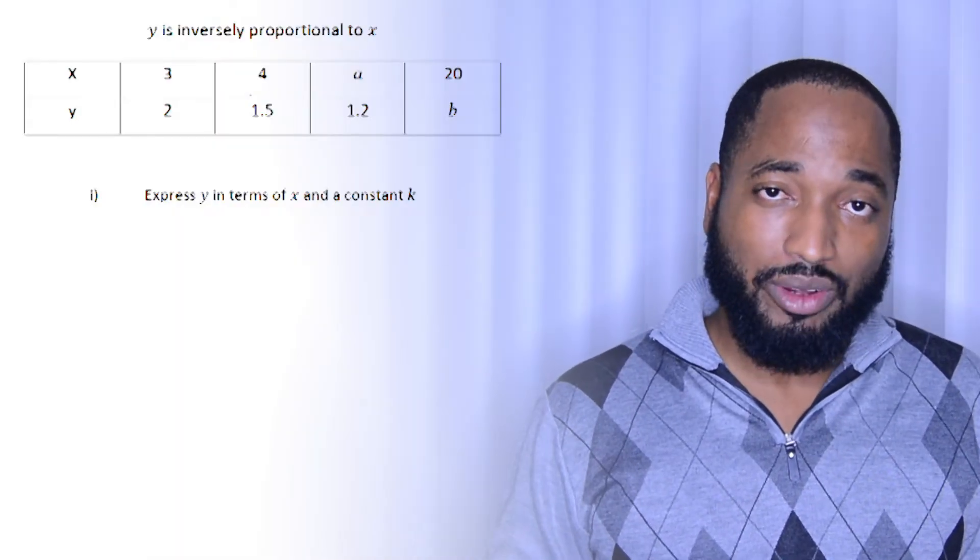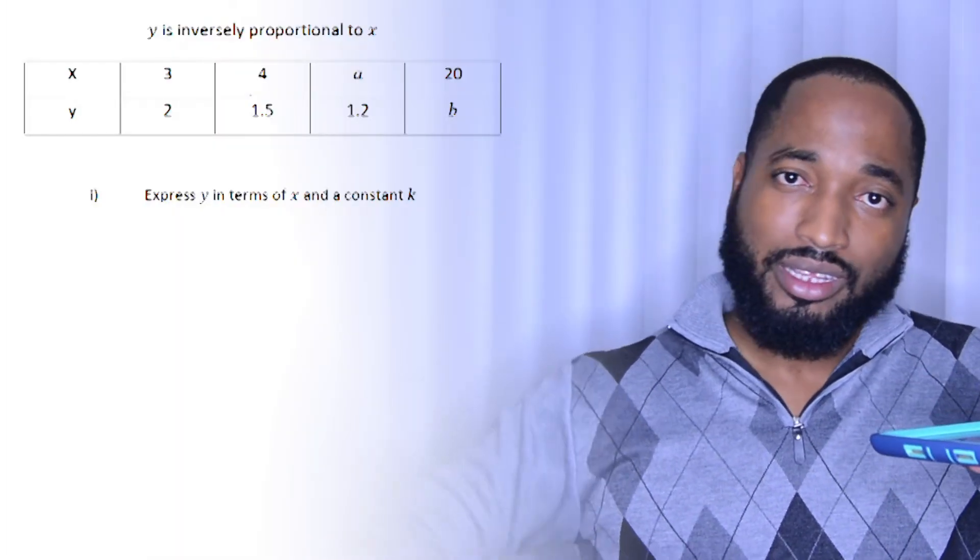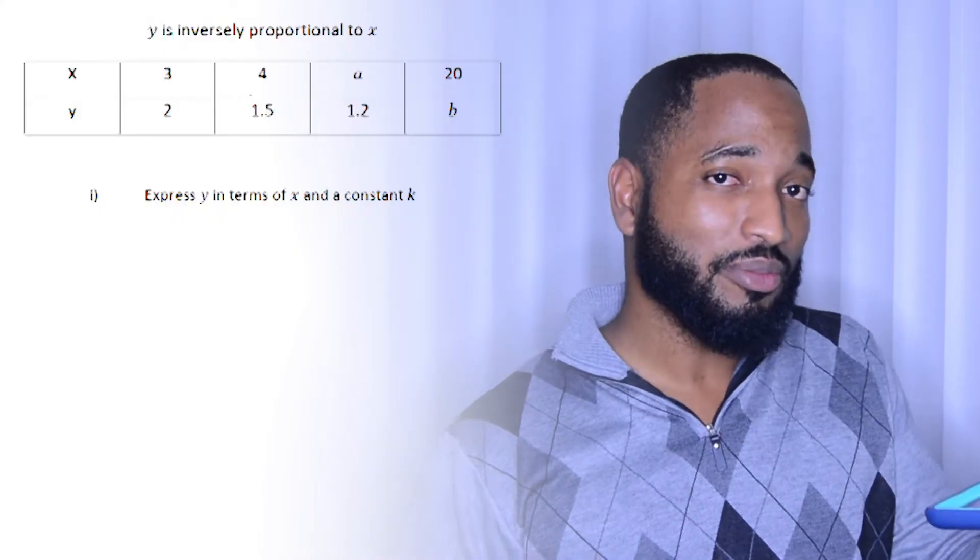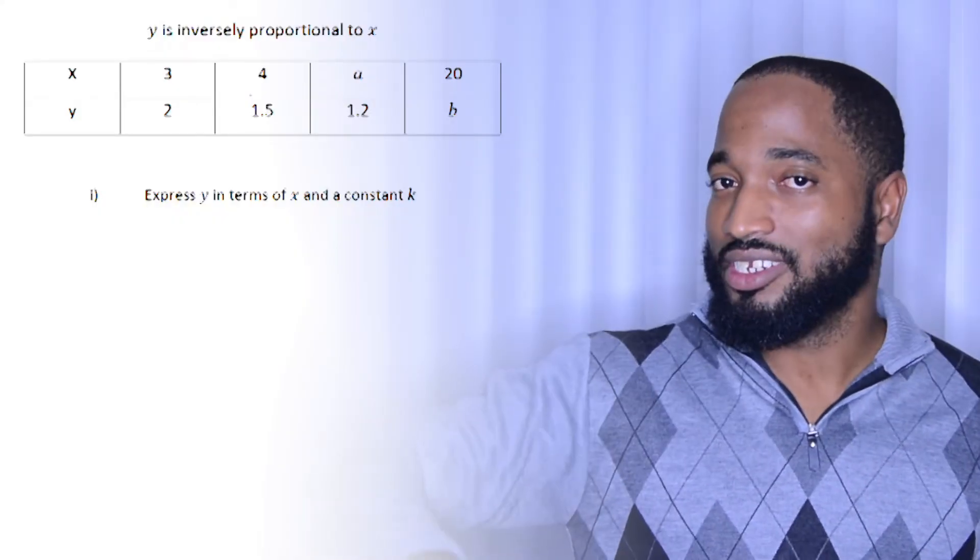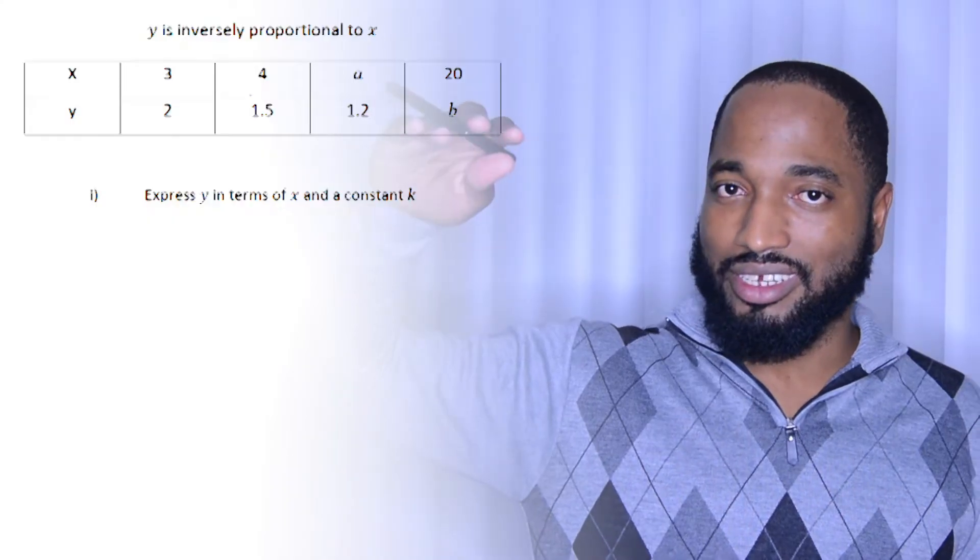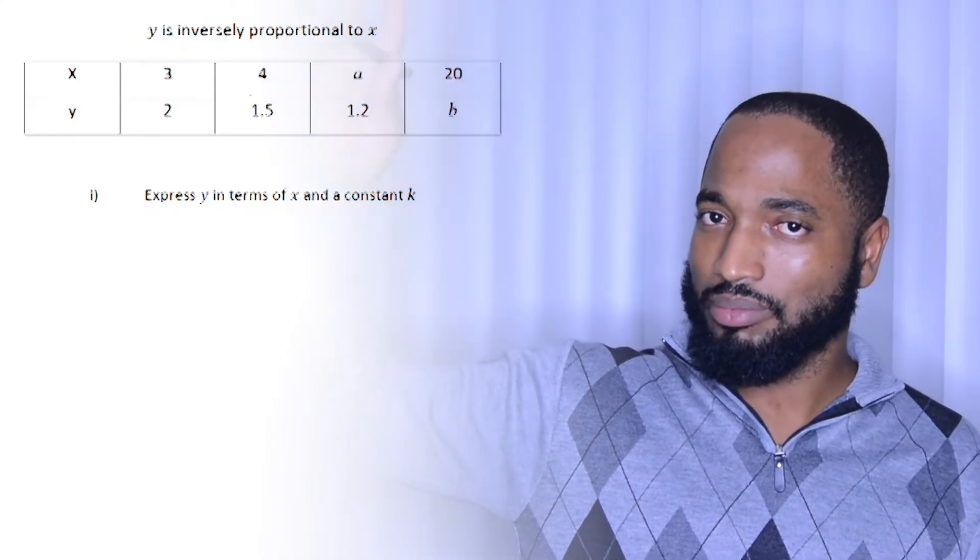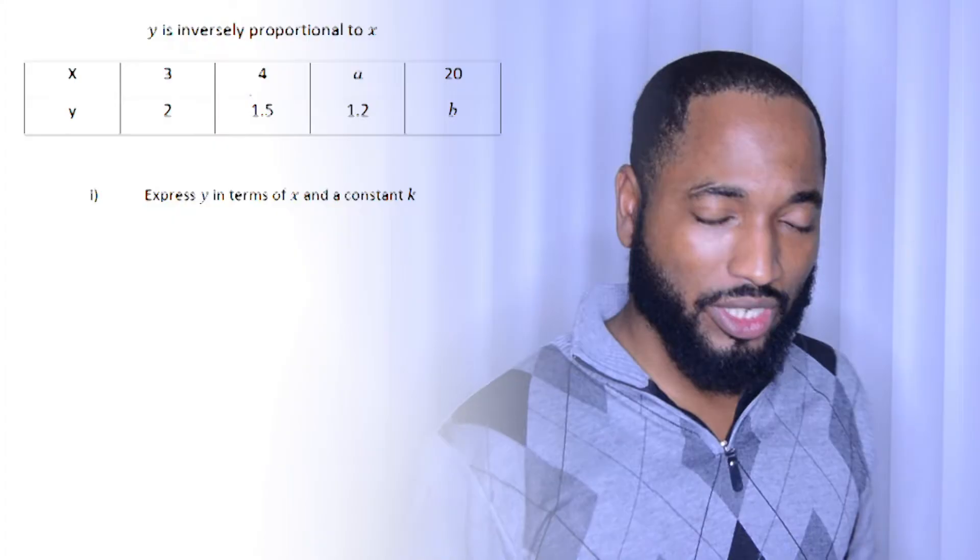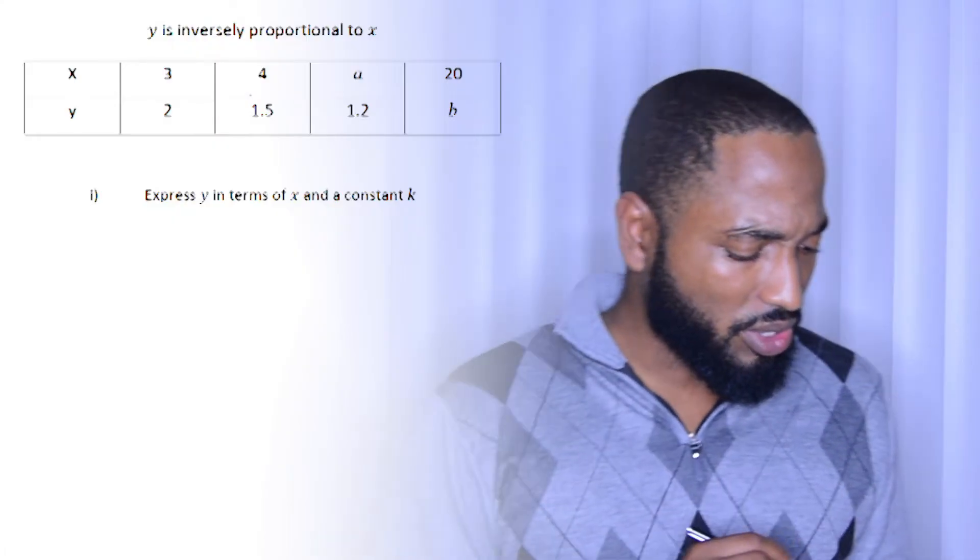Directly proportional would mean that as something goes up. It's like if you think a girl looks beautiful, the more beautiful you think she looks, the more your attraction to the girl goes up. So directly proportional. Alright, let's do the question.